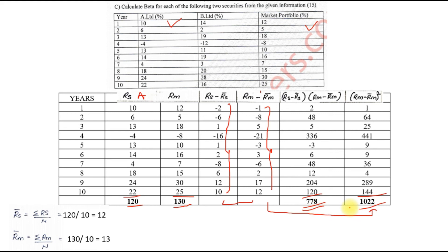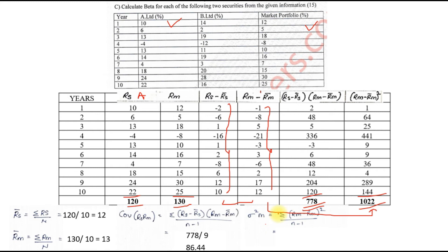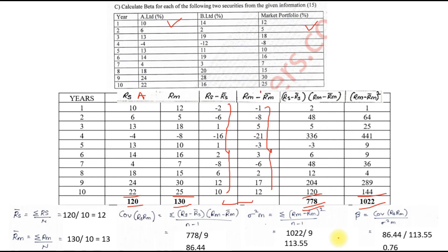Once we have those two totals, we apply two formulas. First, covariance = Σ(RS−RS̄)(RM−RM̄) ÷ (n−1). With n=10, that is 778÷9 = 86.44. Next, variance of market (SD²m) = Σ(RM−RM̄)² ÷ (n−1) = 1022÷9 = 113.55. Finally, beta = covariance ÷ SD²m = 86.44÷113.55 = 0.76.